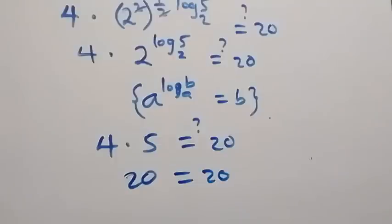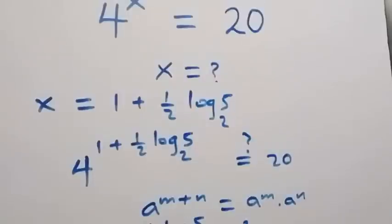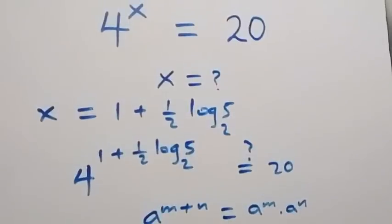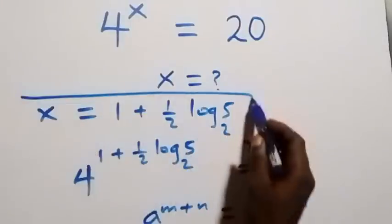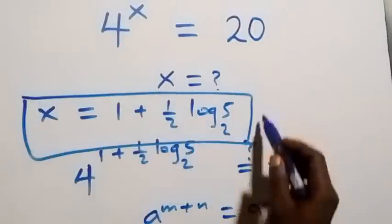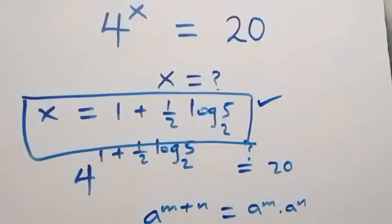Since the left-hand side equals the right-hand side, this confirms that x equals 1 plus half log 5 to base 2 satisfies the given equation. Thank you for watching — don't forget to subscribe for more videos, turn on the notification bell, share this video, give a thumbs up, and leave your comments in the comment section. See you next class!